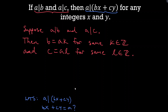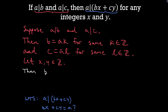We need to introduce X and Y as arbitrary integers, so let X and Y be integers. Now, we know B equals AK, so BX equals AKX. And since C equals AL, CY equals ALY. We've just multiplied both sides — B equals AK by X, and C equals AL by Y.